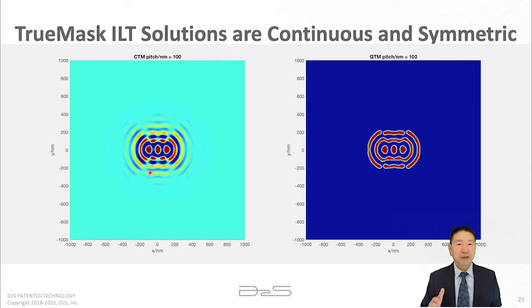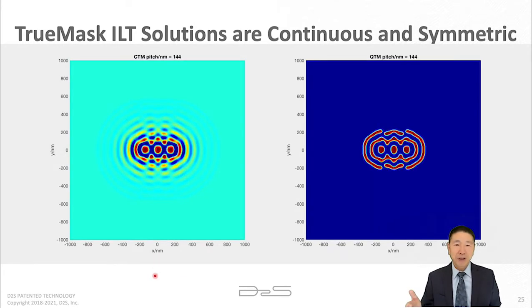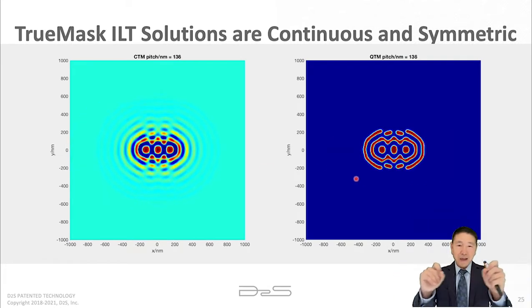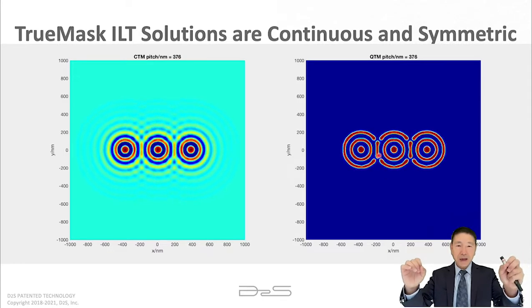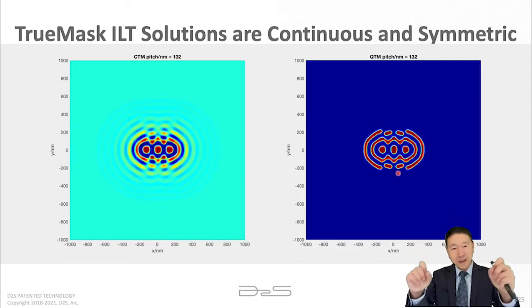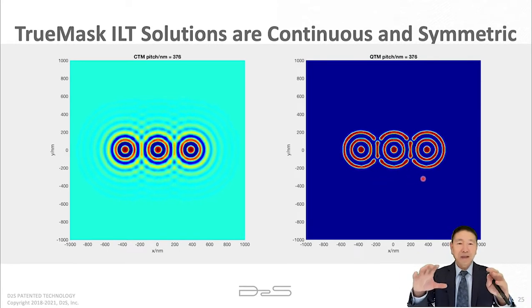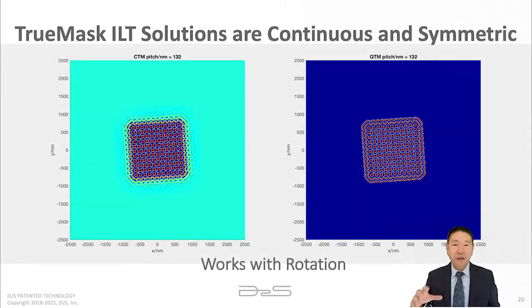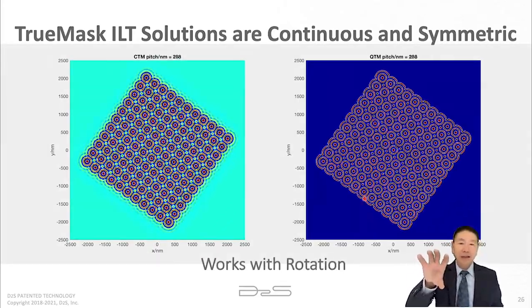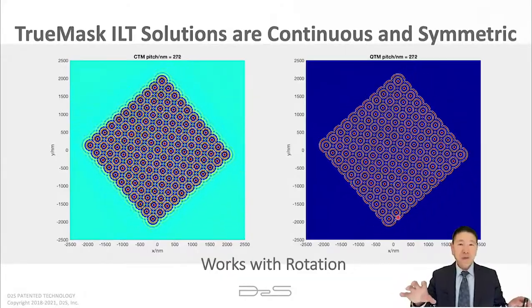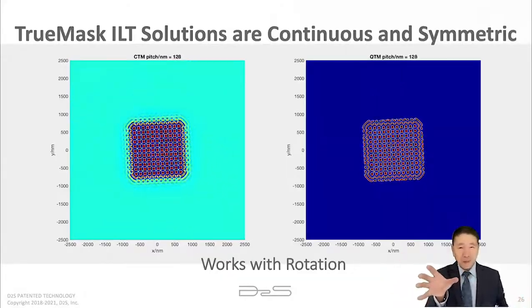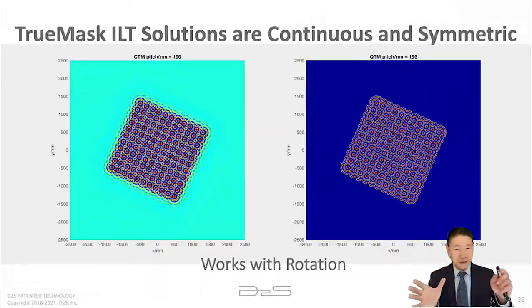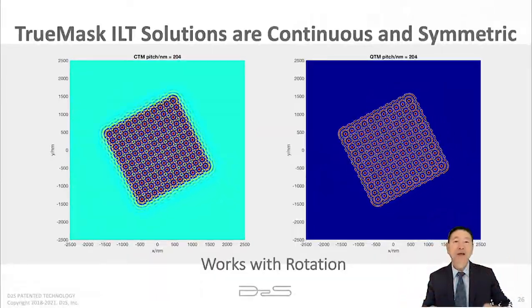Using D2S's ILT solution as an example: for three contacts with varying pitch — symmetric configurations — as the pitch gradually increases the ILT solutions are symmetric and continuous. In a second example with an array where pitch is changed and rotation is applied, a very challenging scenario, the D2S ILT solutions remain continuous and symmetric in all orientations.